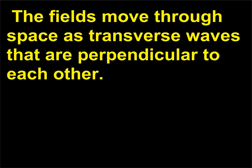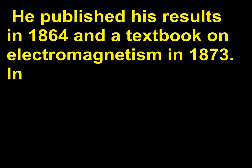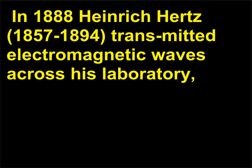The fields move through space as transverse waves that are perpendicular to each other. Maxwell calculated the speed and found that it was equal to the speed of light. He published his results in 1864 and a textbook on electromagnetism in 1873. In 1881, Oliver Heaviside wrote Maxwell's famous four equations in the form they are used today. In 1888, Heinrich Hertz (1857–1894) transmitted electromagnetic waves across his laboratory, confirming Maxwell's theoretical work.